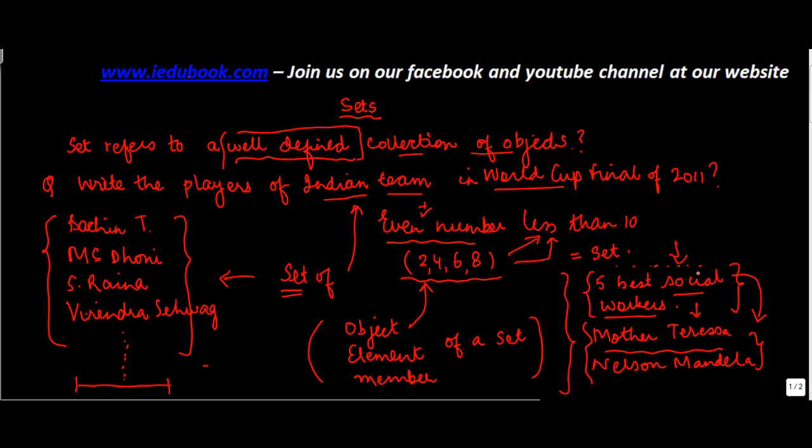So we really don't know what to put in if this was the thing which was given to us. Therefore, this cannot be a set. Why? Because a set has to be a well-defined collection of objects. I hope you are clear on the concept of sets.